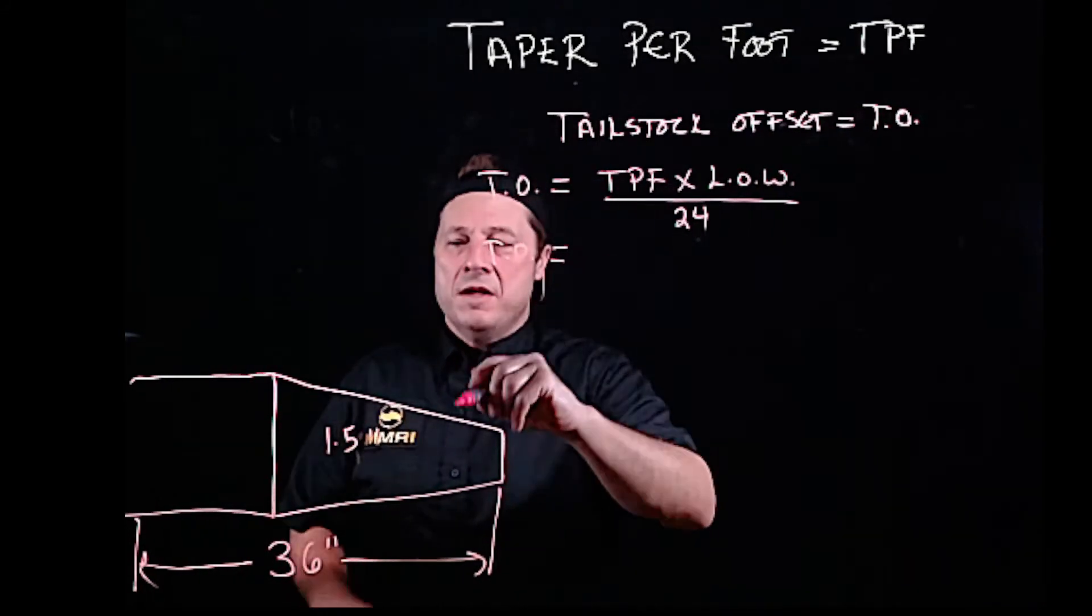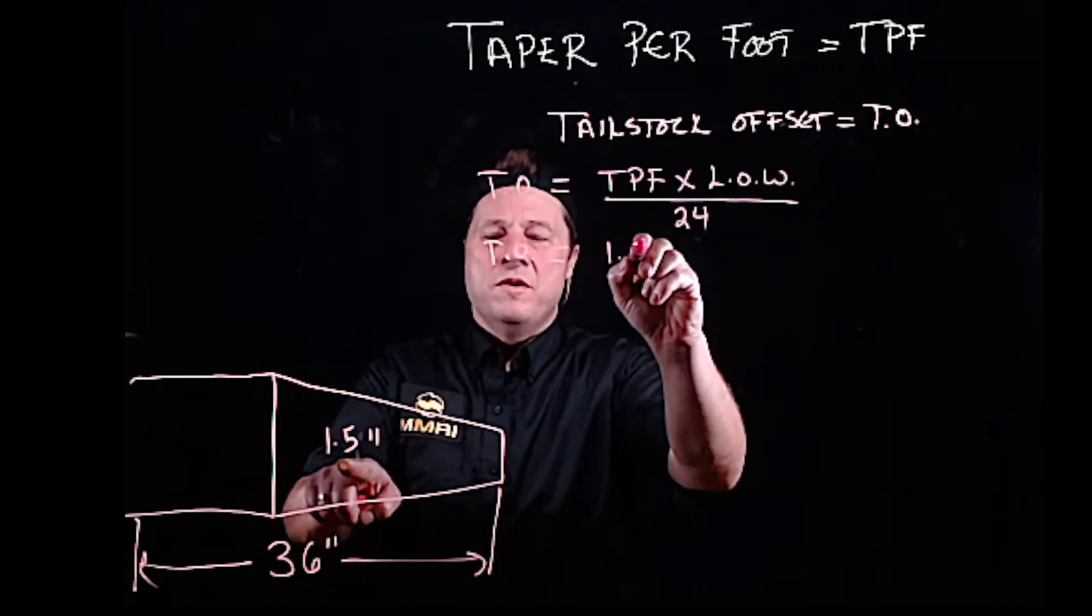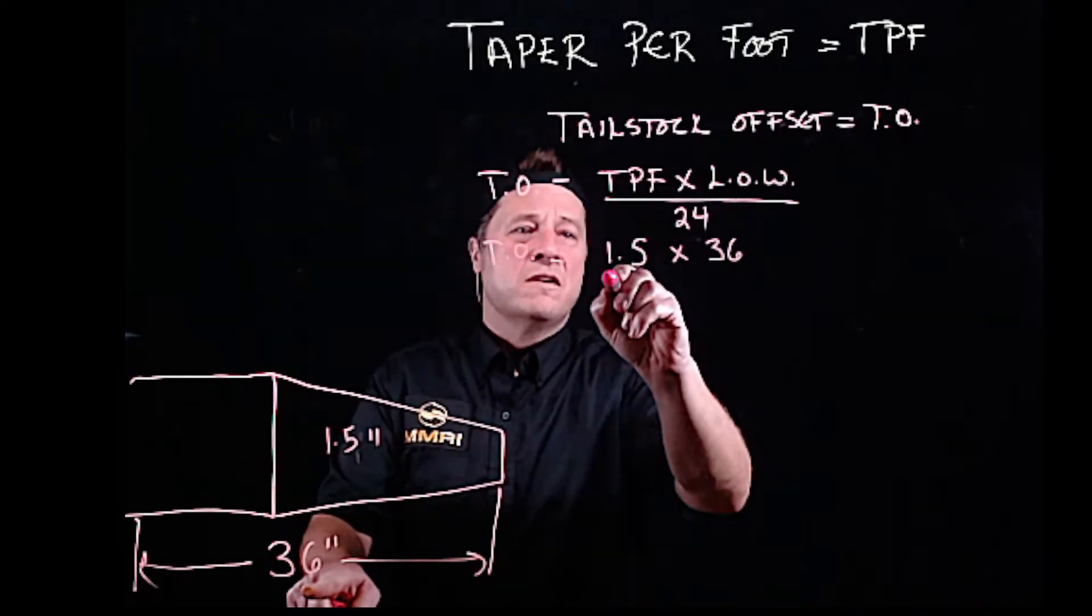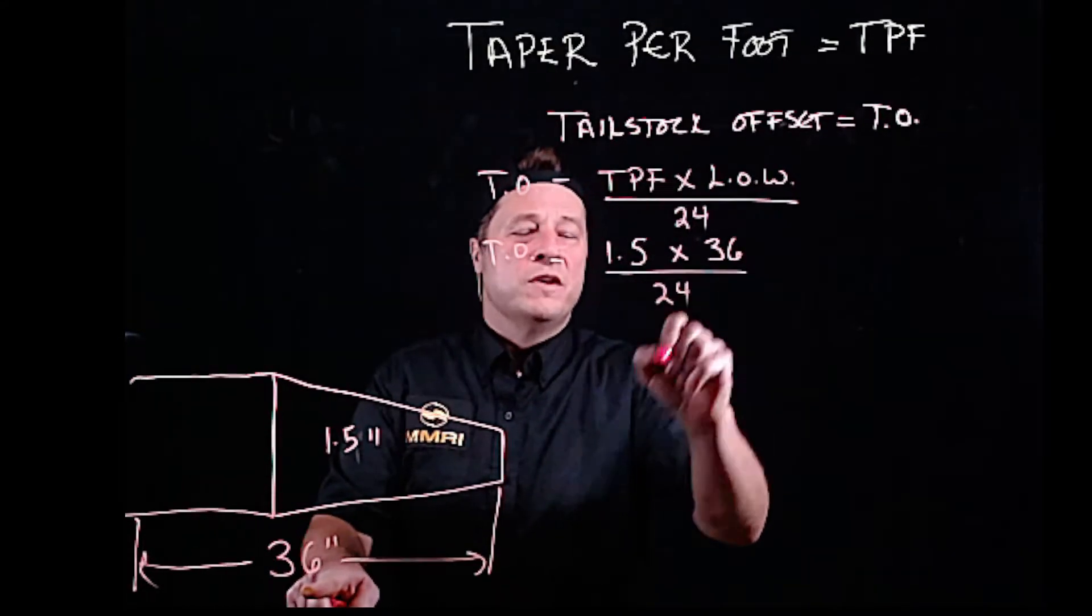Now I can figure out my tailstock offset. My taper per foot is 1.5 times a 36 inch long piece of work, divided by 24.